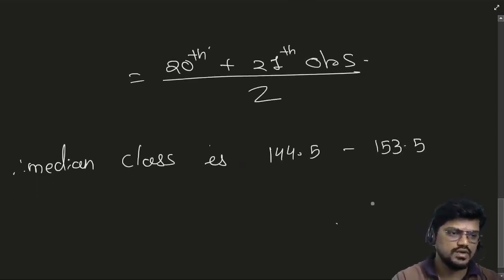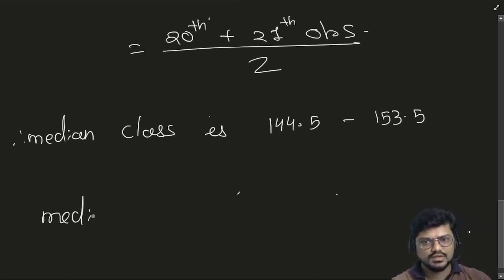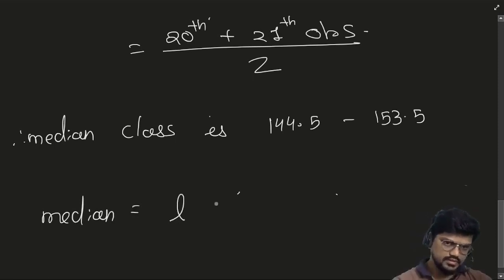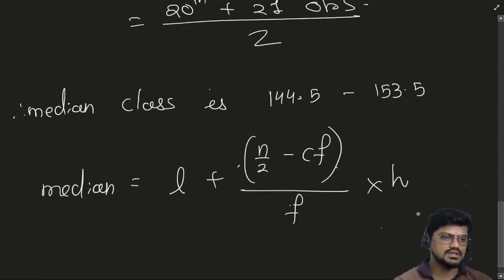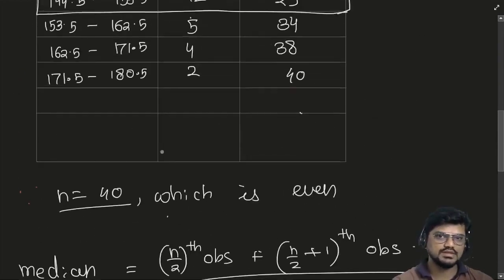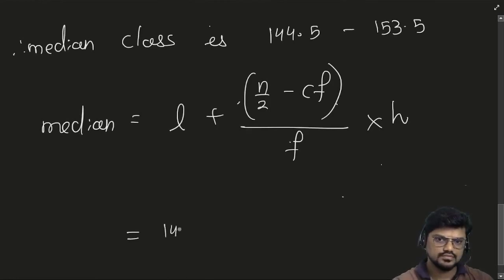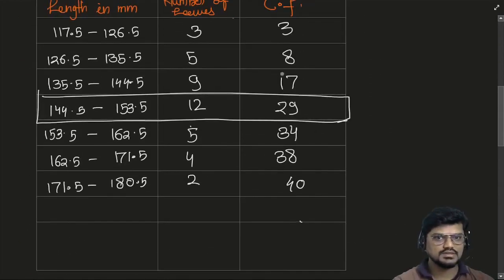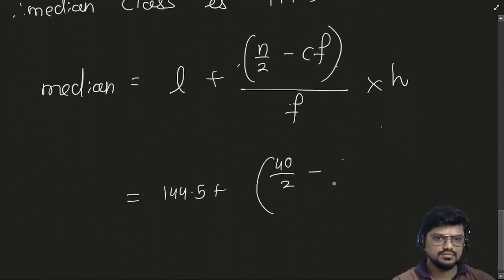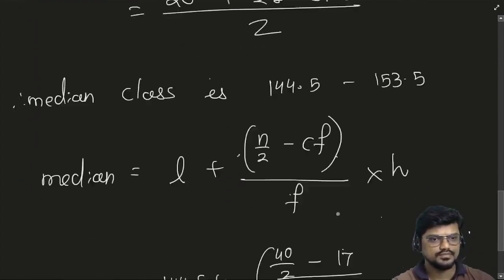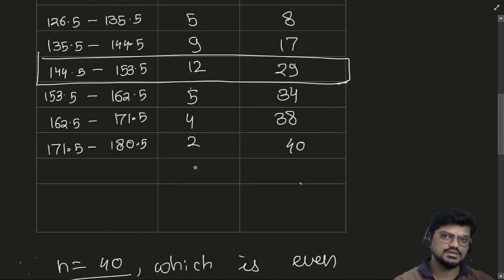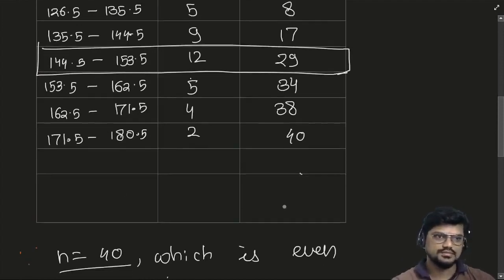To find the median, we have the formula: Median = L + (n/2 − cumulative frequency of the class preceding the median class) / F × H. Here L is the lower limit of the median class, which is 144.5. n is 40, the cumulative frequency of the preceding class is 17, F (frequency of median class) is 12, and H (class interval) is 9.